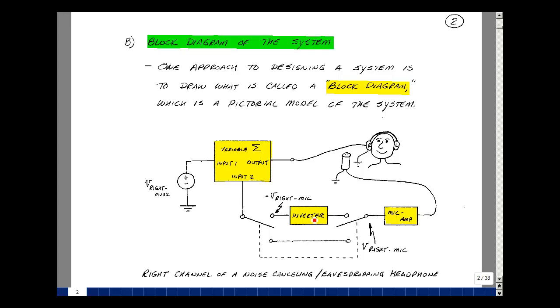I'm going to amplify that signal because it'll be pretty small. I'll throw a switch and put it through an inverter, which will change the sign of it. Then I'm going to add that result to the music. I'd like to make this summer variable to adjust the gain of that amplifier. Maybe I'd like the music source also variable to control volume. The second switch position takes that microphone signal without inverting it, then adds it to the music, making it a set of eavesdropping headphones.